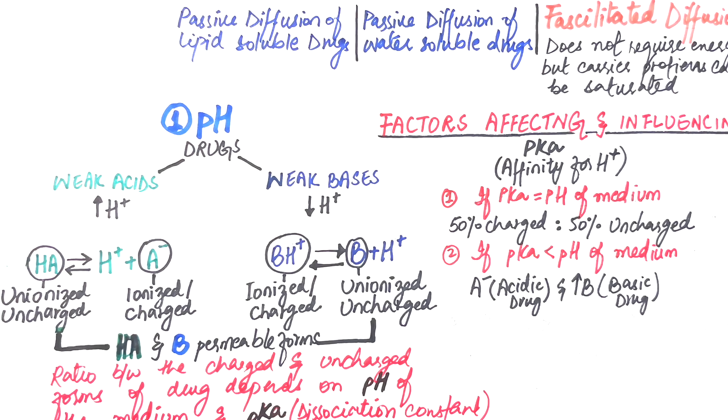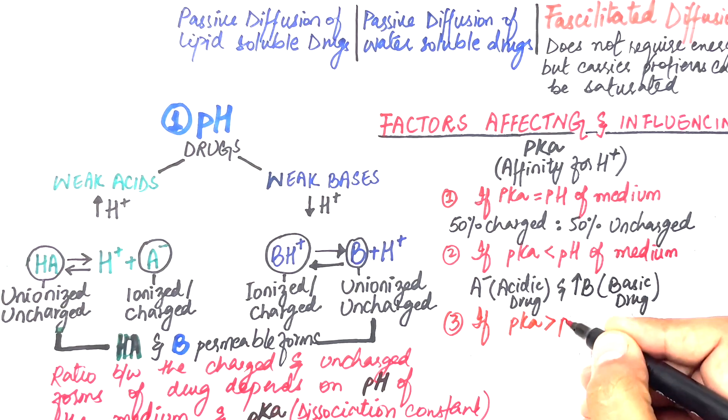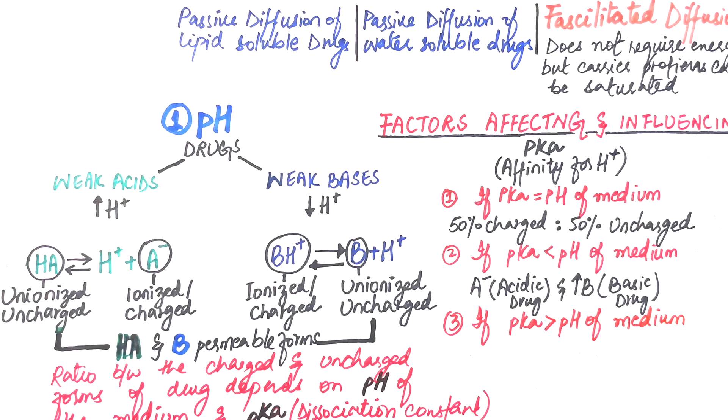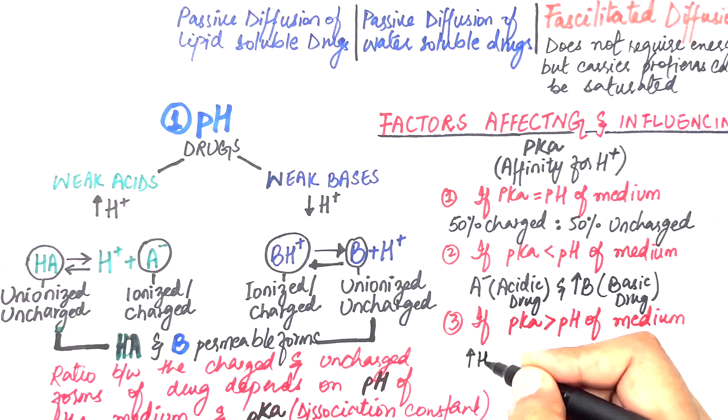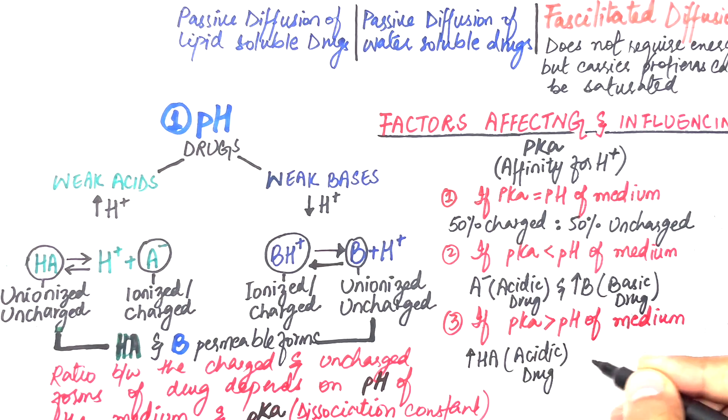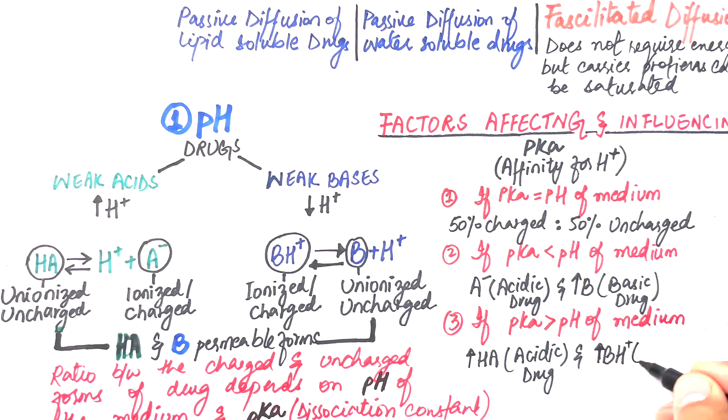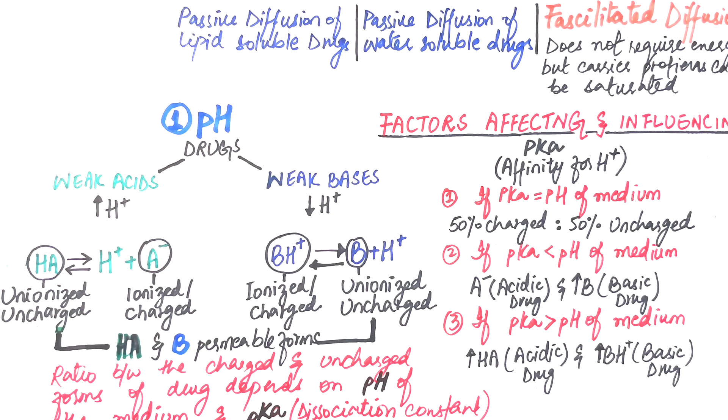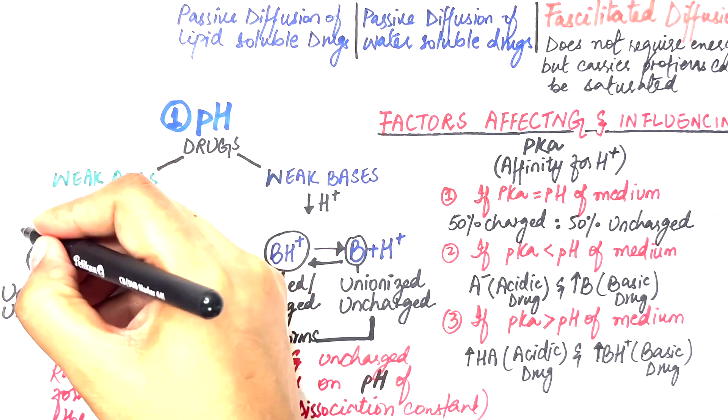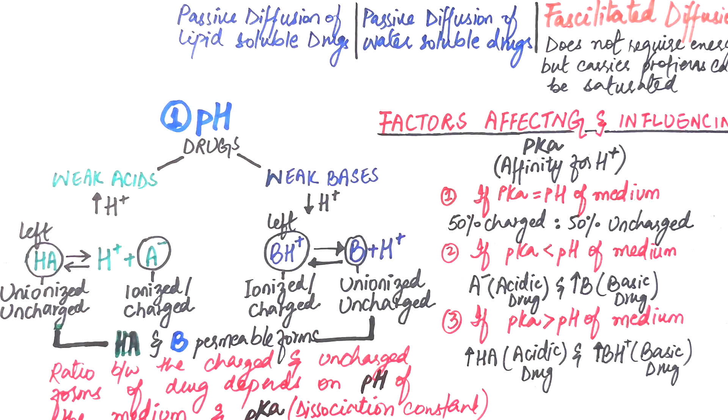Conversely, if the pKa value is higher than the pH value of the medium, the affinity for hydrogen will be higher, hence the protonated forms HA for an acidic drug and BH plus for a basic drug will predominate. What we can learn here is that if the pH of the medium is low or acidic, such as the acidic pH of the stomach where hydrogen ions are already saturated, the equilibrium for an acidic and a basic drug in such a medium will shift towards the left, that is, the drug will remain in its protonated forms for both weak acids and weak bases.